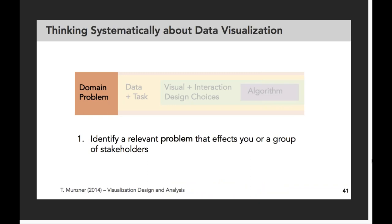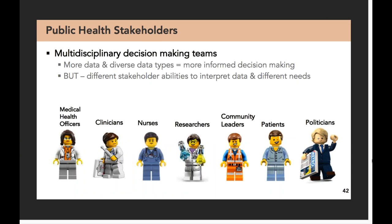The domain problem is really about identifying a relevant problem that affects you or a group of stakeholders. In public health, we actually have multidisciplinary decision making teams, which is the interesting part for me in my own research — we have to communicate or share findings with a wide variety of people from researchers to medical health officers to politicians. So we have this idea of a data-driven evidence-based decision making model. But as you have all these different stakeholders, they'll have different needs of the data and different abilities to interpret it. Taking all these different needs into consideration is important, not just for statistical analysis, but for visualization design and analysis as well.